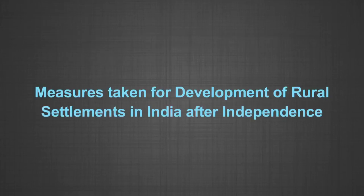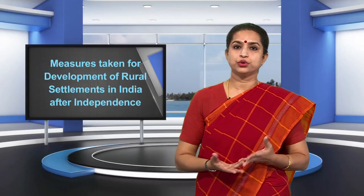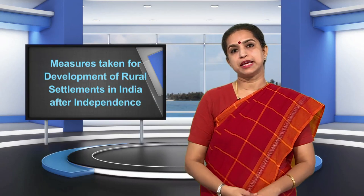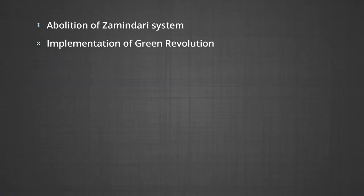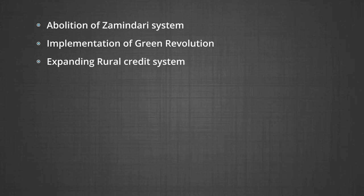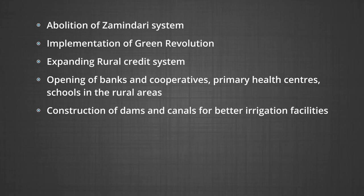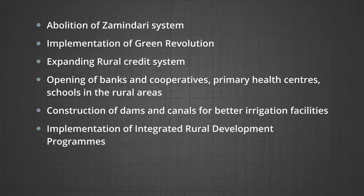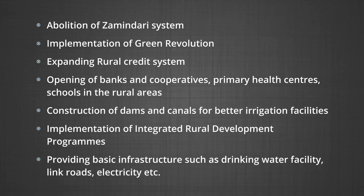Measures taken for development of rural settlements in India after independence: in the post-colonial era, after colonized countries became independent, most countries made progress in all sectors of the economy. The Indian government adopted planned measures for the development of rural settlements, including: abolition of the zamindari system, implementation of the Green Revolution, expanding rural credit systems, opening banks and cooperatives, primary health centers and schools in rural areas, construction of dams and canals for better irrigation facilities, implementation of integrated rural development programs, and providing basic infrastructure such as drinking water facilities, linking roads, and electricity.